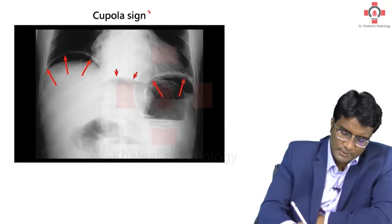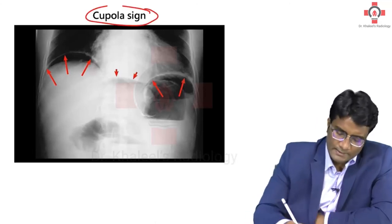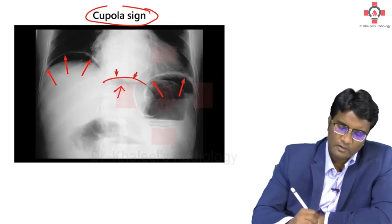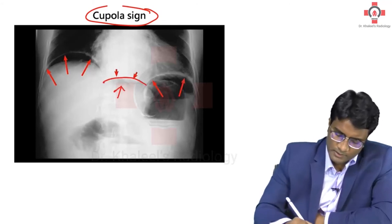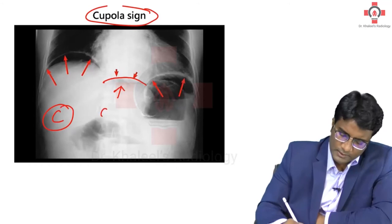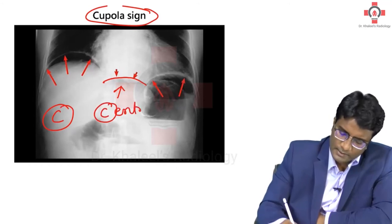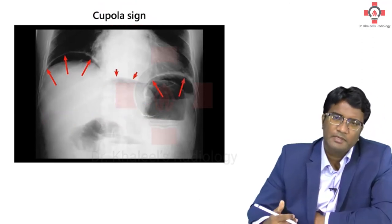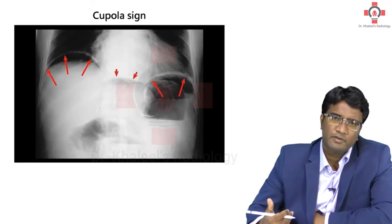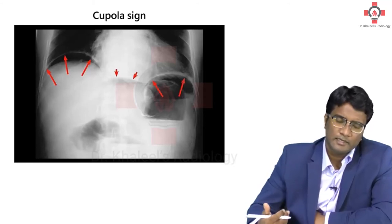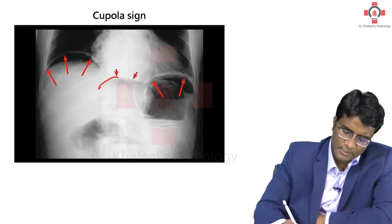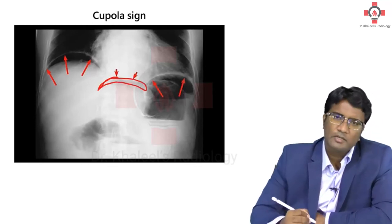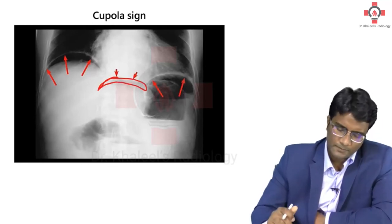What is the cupola sign? Cupola sign is air under the central tendon of the diaphragm. You can remember C for C — cupola sign is air under the central tendon of the diaphragm. So we have two signs: air under the right dome of diaphragm, and air under the central tendon of the diaphragm which appears like a moustache. This is the cupola sign.